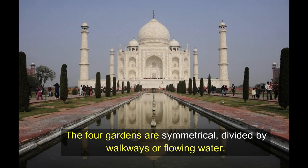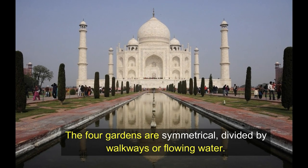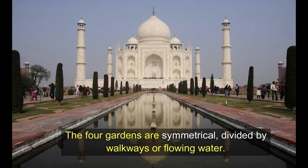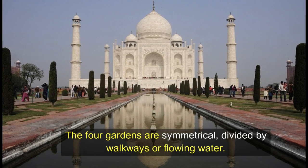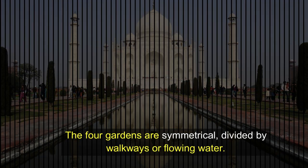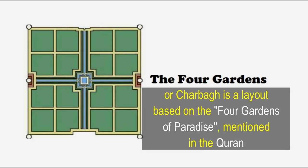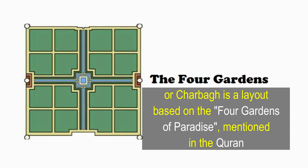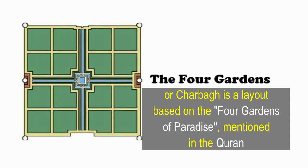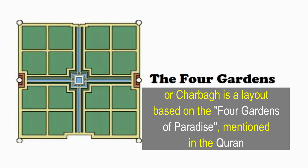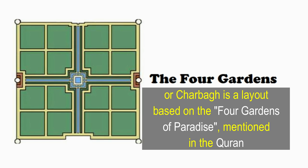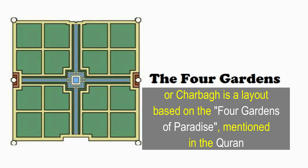These four gardens are symmetrical and are divided by walkways or flowing water. Charbagh is a Persian and Islamic quadrilateral garden layout based on the four gardens of paradise mentioned in the Quran.